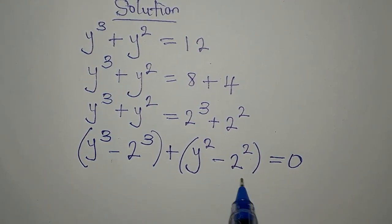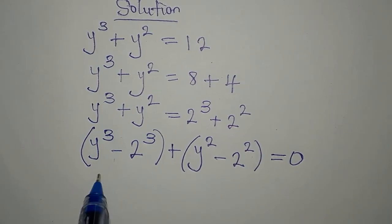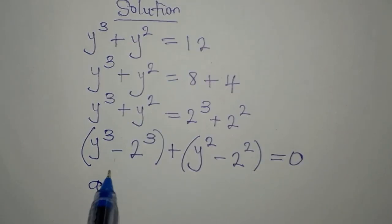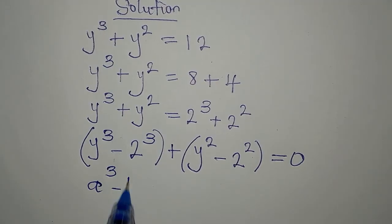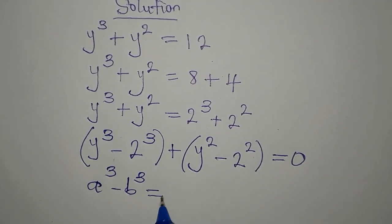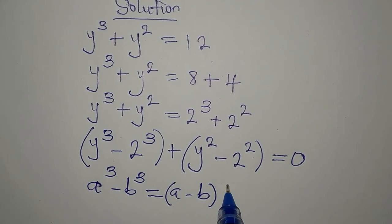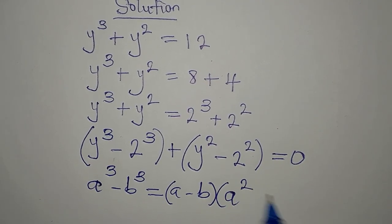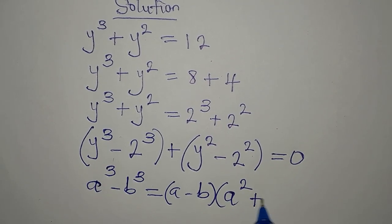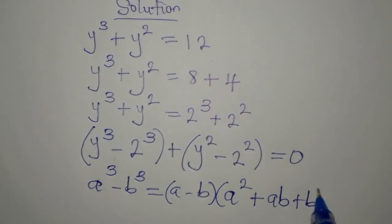From here we apply the difference of two cubes and the difference of two squares. The difference of two cubes identity is: a³ minus b³ equals (a minus b)(a² + ab + b²).